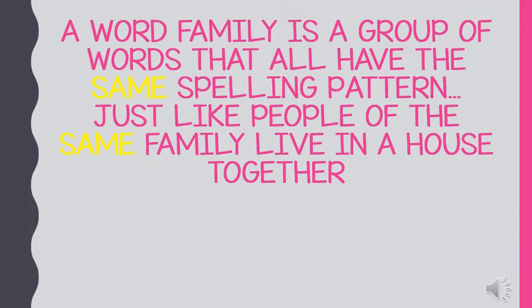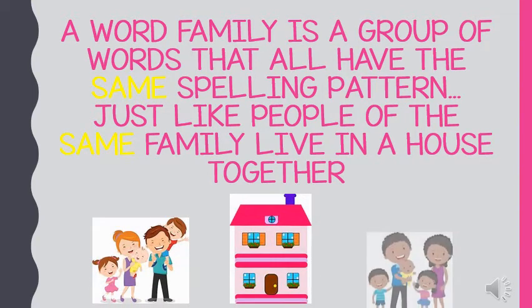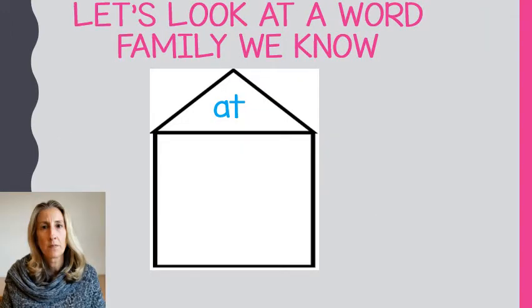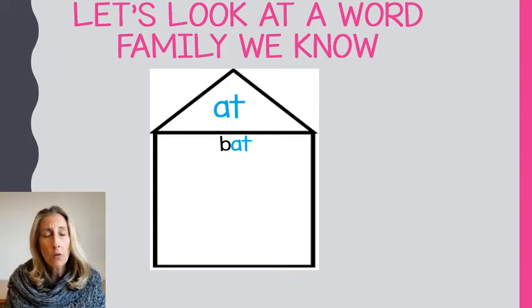A word family is a group of words that all have the same spelling pattern. Just like people of the same family live in a house together, when you have a word family, all the parts are the same. Let's look at a word family we know together: 'at.' If we look at all the words in this house, they're all going to have the same word family, 'at.'